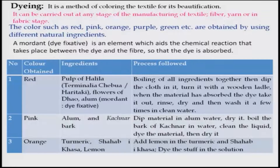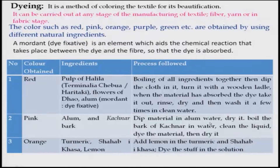The pulp of Halila is used here, but there might be several other natural flowers, wood, or seeds that can be utilized. For pink color, you use Kochnar bark with alum — dip the material in alum water and dry it, then boil the bark, strain the liquid dye material, and dry it. This process is slightly different: first the cloth is dipped in alum water and dried, and then put into the boiled dye.